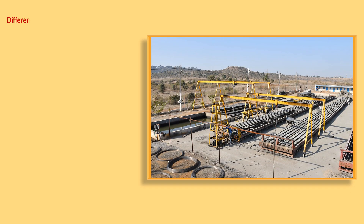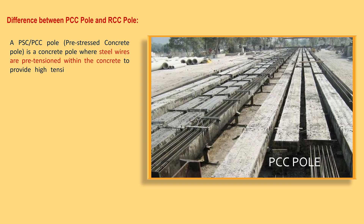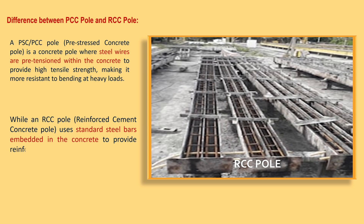The difference between PCC and RCC poles: a PCC pole has steel wires pre-tensioned within the concrete to provide high tensile strength, making it more resistant to bending at heavy loads. An RCC pole uses standard steel bars embedded in the concrete to provide reinforcement, but without the pre-tensioning process.